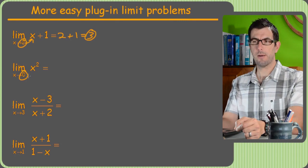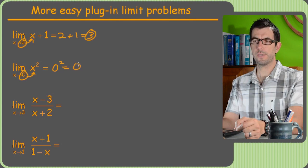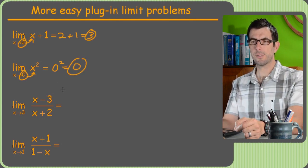X approaching 0 on this one. I don't know what that means, but hey, let's plug in 0 for X squared. We get 0 squared, which equals 0. Nice. The correct answer is 0.